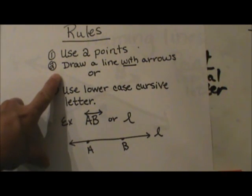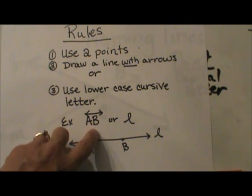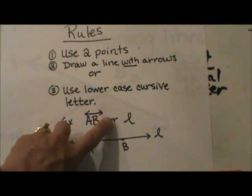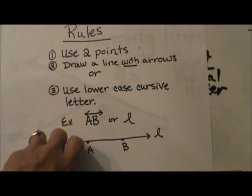You are going to draw a line with arrows over those two letters. Here is our example. We just looked at line A, B. You would write A, B with a line with arrows on the end. The arrows represent a line and not a line segment.